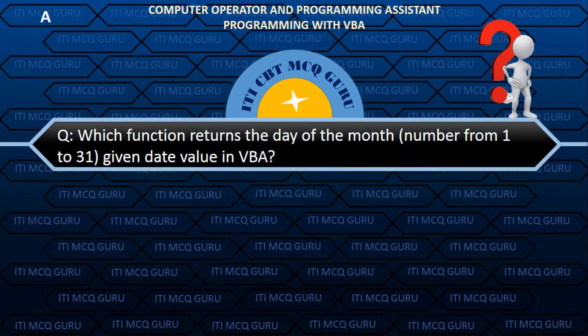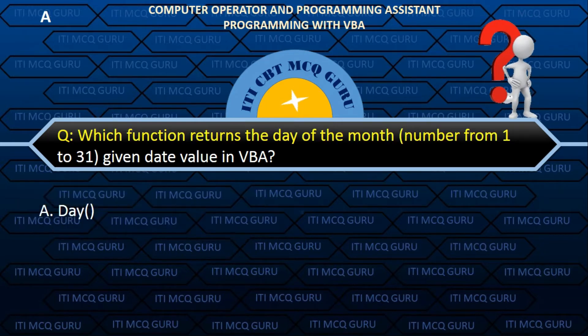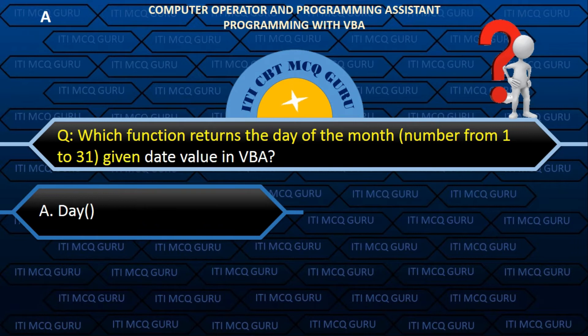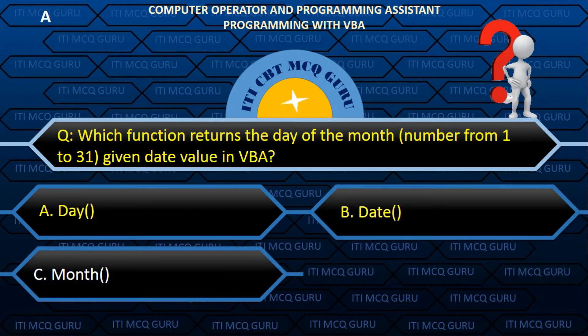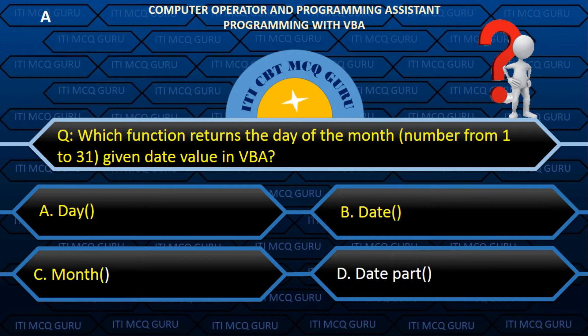Which function returns the day of the month as a number from 1 to 31 for a given date value in VBA? Answer: A. DAY.